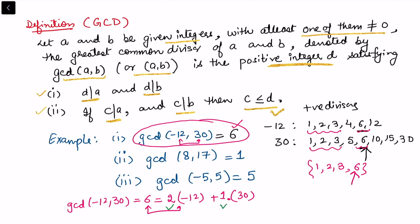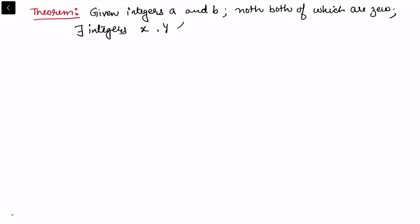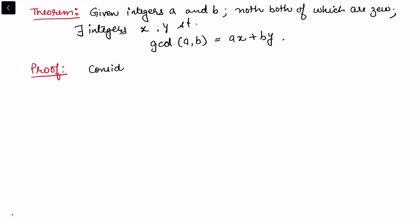Now I'll write down a theorem which explains this result. The theorem says: given integers a and b, not both of which are 0, there exist integers x and y such that the greatest common divisor of a and b can be written as the linear combination ax + by.